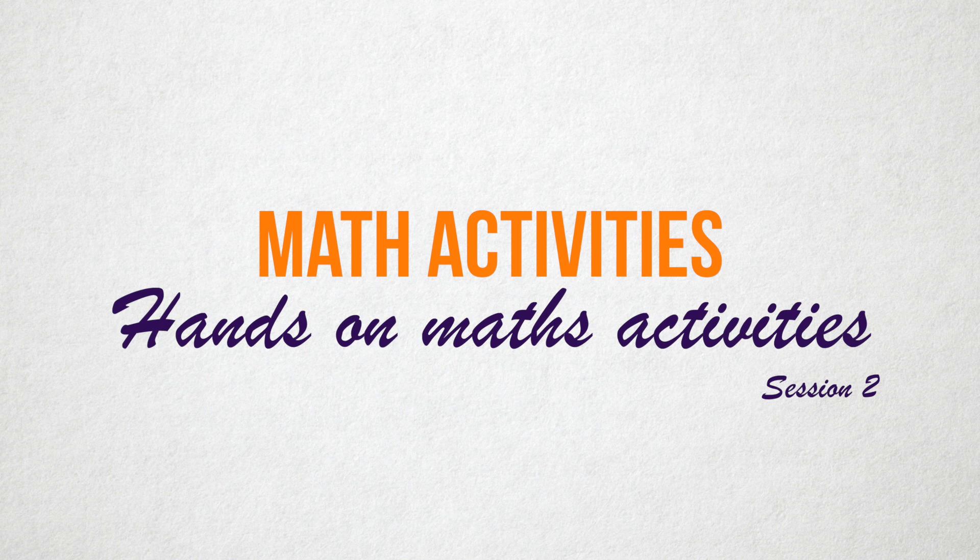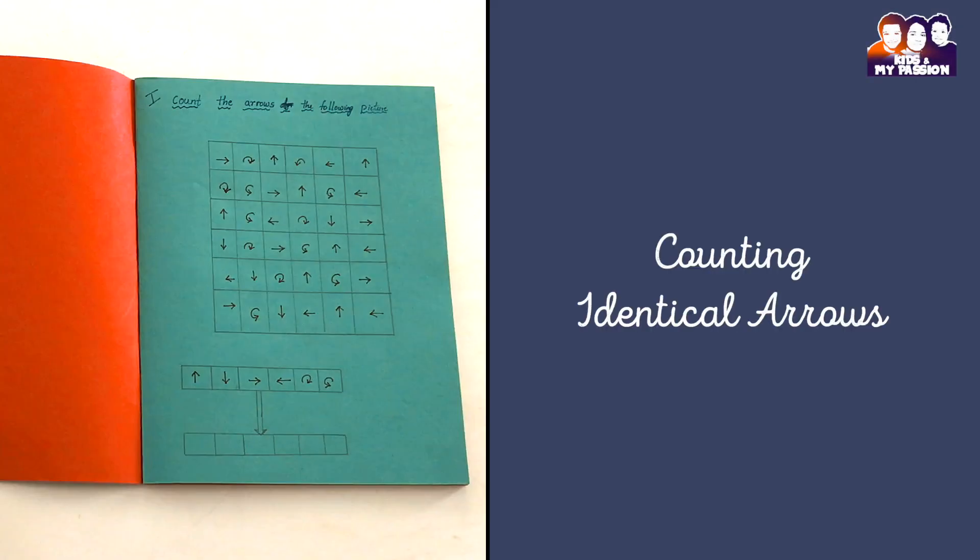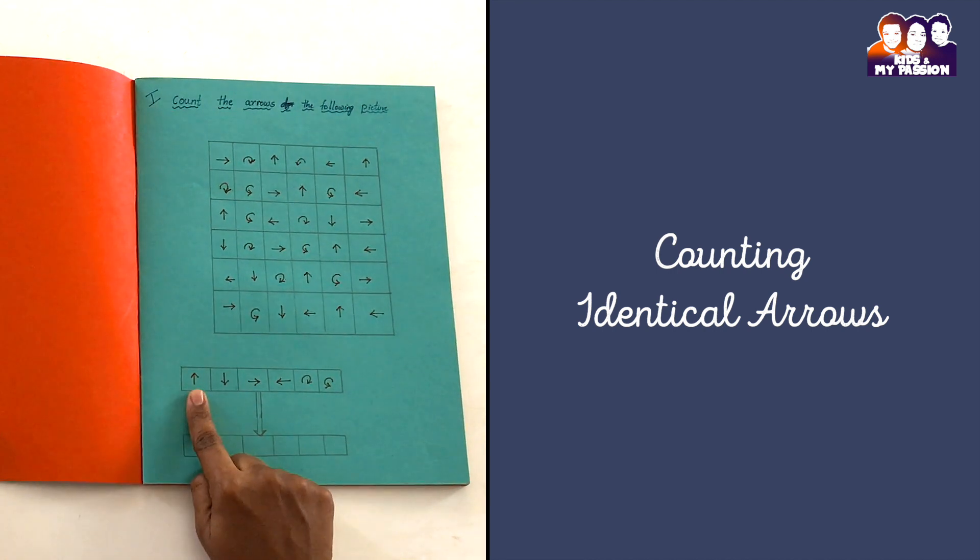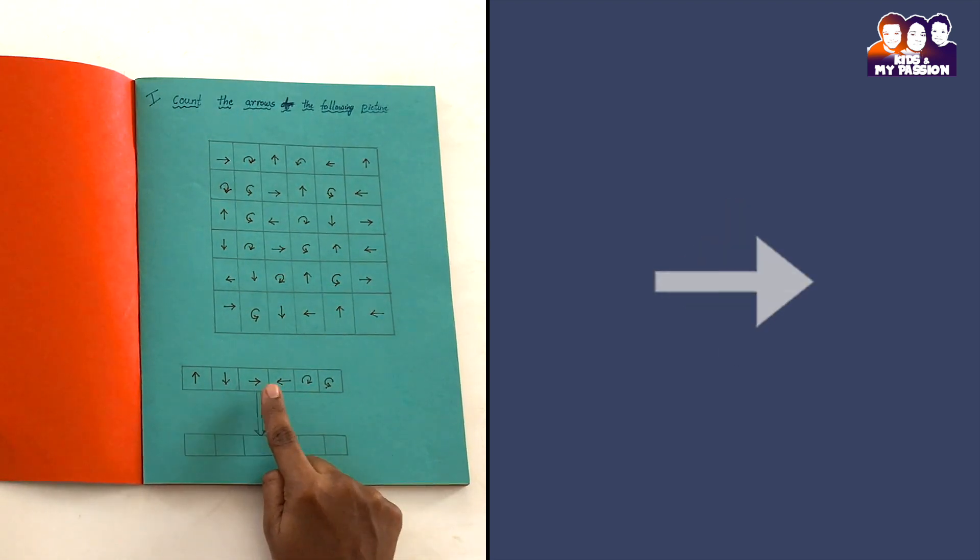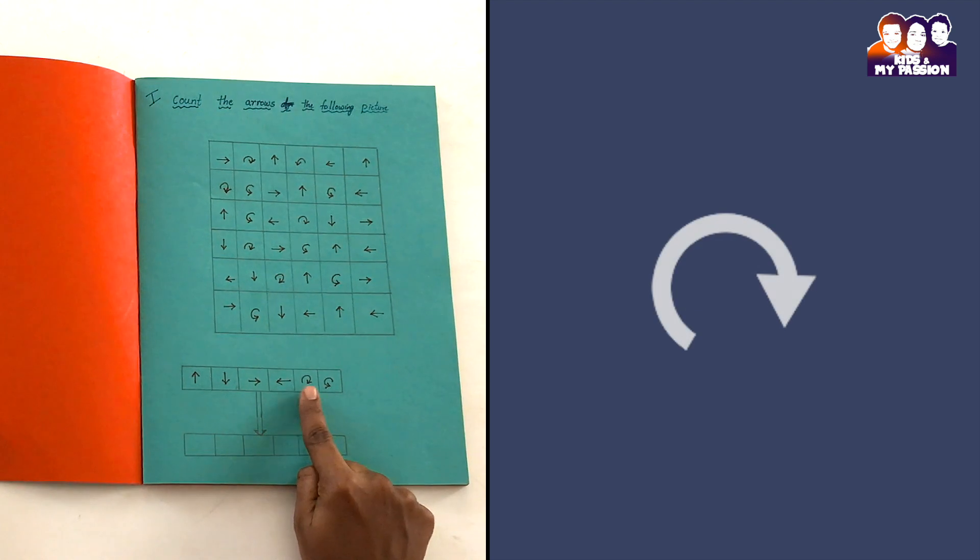First activity: identification of same arrows in the given picture which seem to look symmetrical. We are using up arrow, down, right, left, clockwise, and anti-clockwise. Let's see an example for counting up arrows.